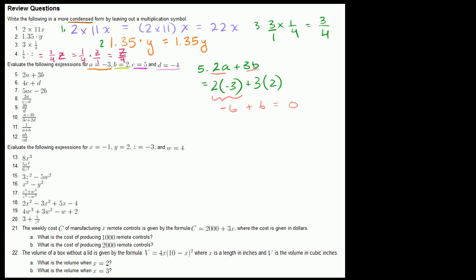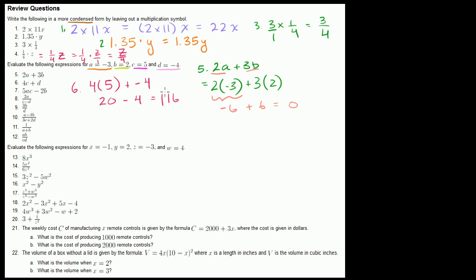Problem 6: we have 4 times c plus d. c equals 5, so 4 times 5, plus d which is negative 4. So we have 4 times 5 equals 20, plus negative 4 — that's the same as minus 4 — so that equals 16.